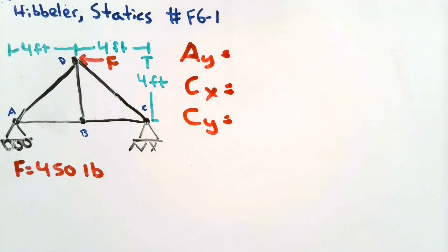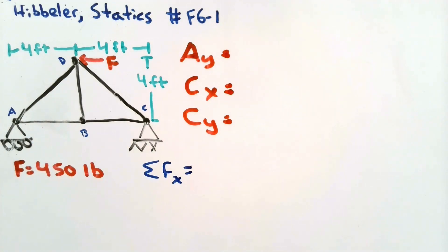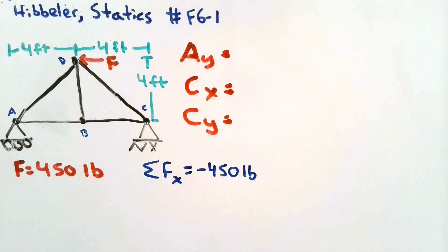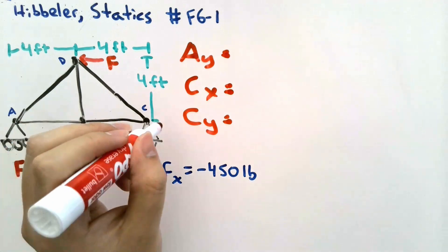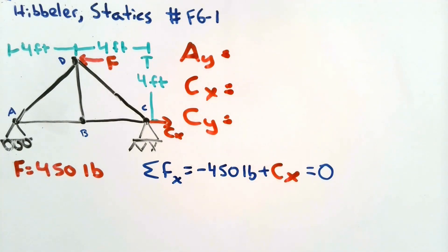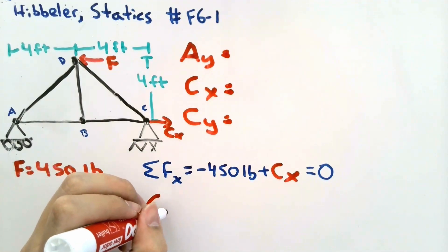We can find those reactions by applying the equations of equilibrium. We could start by trying the sum of forces in the x direction. In the x direction, we will have no reaction from the roller, but we will have a force of 450 pounds acting in the negative x direction. We also have a reaction from the hinge in the x direction. From observing the diagram, we know that the force at the hinge will be in the positive x direction. Applying the equations of equilibrium gives us the value of the reaction at the hinge in the x direction.